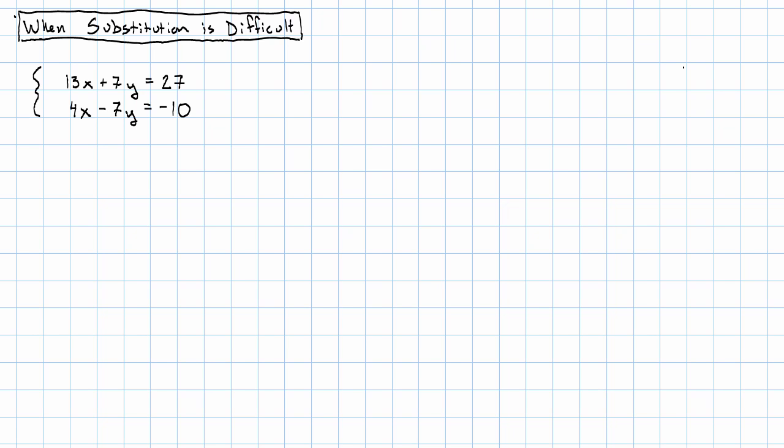Suppose we meet the system 13x plus 7y equals 27, and 4x minus 7y equals negative 10.